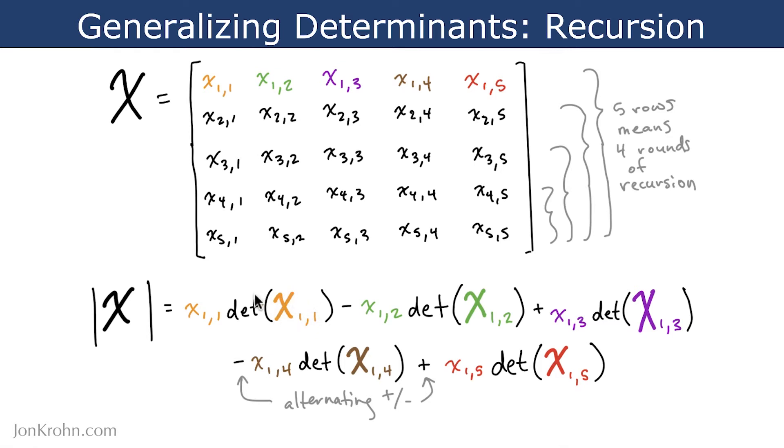And what this means, this matrix X11, it's the 4x4 matrix here that is not in any of the rows or columns that the scalar value X11 is in.